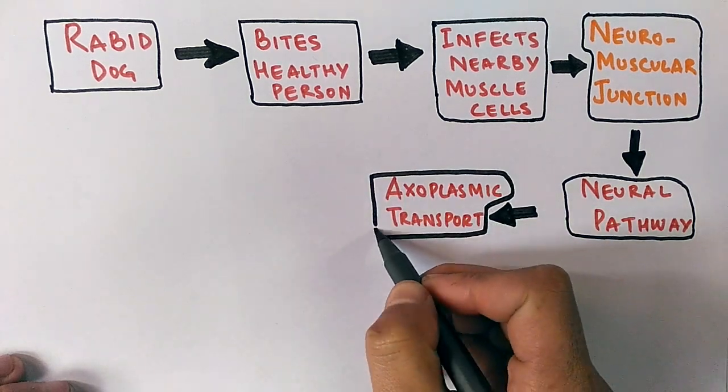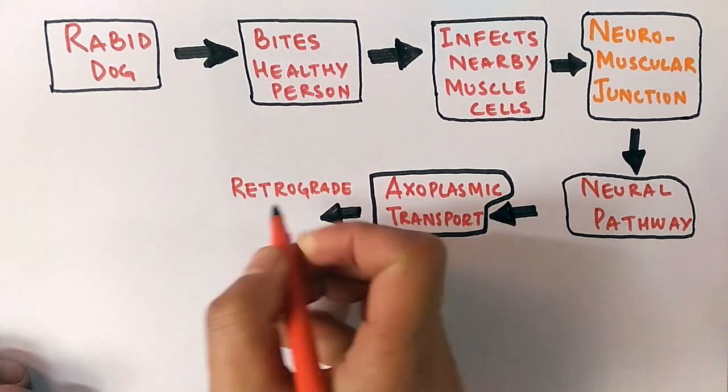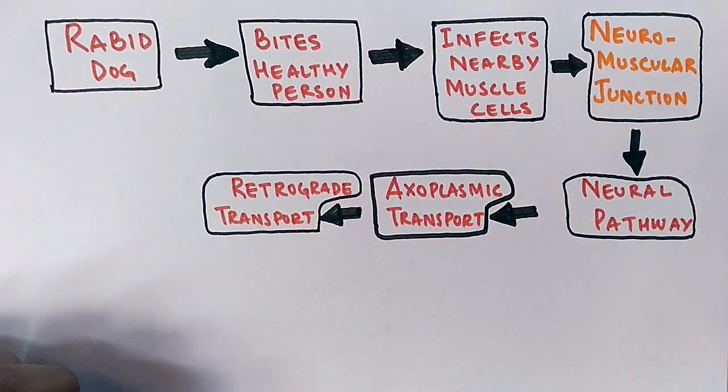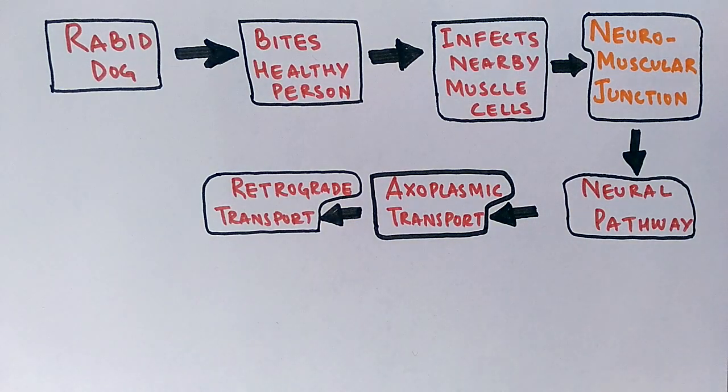Through this neural pathway it occurs a transport path which is called axoplasmic transport. In this axoplasmic transport we have retrograde transport, in which there is transmission and transport of materials towards the cell body.